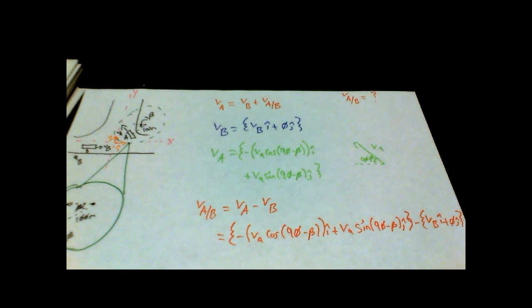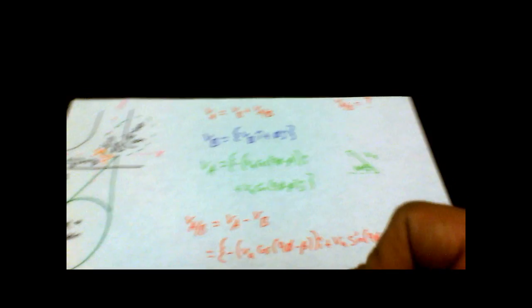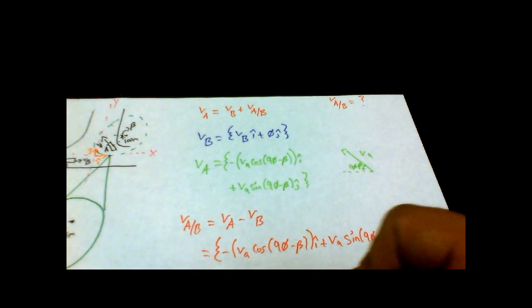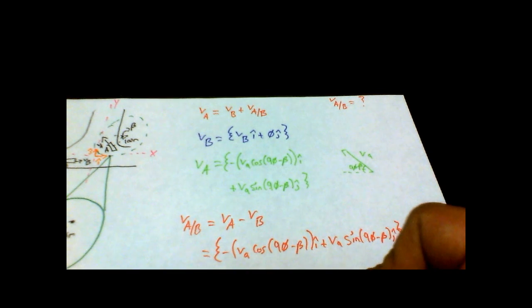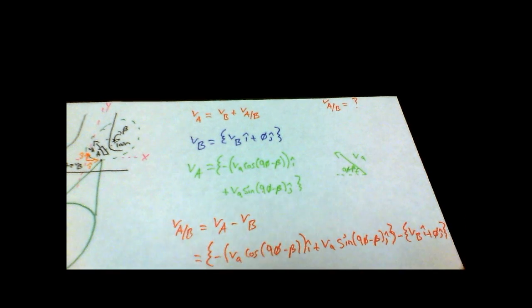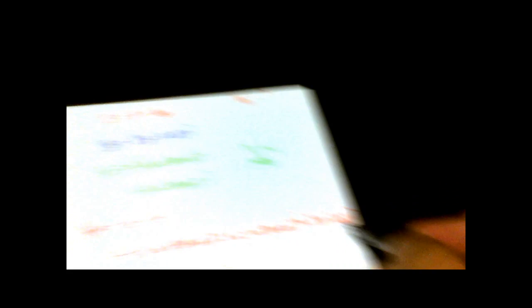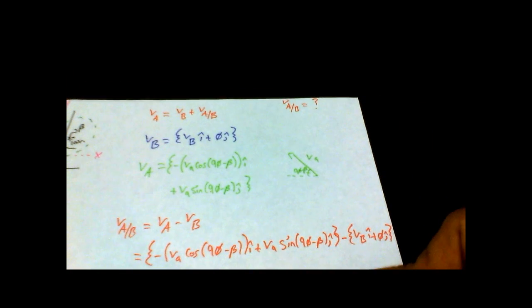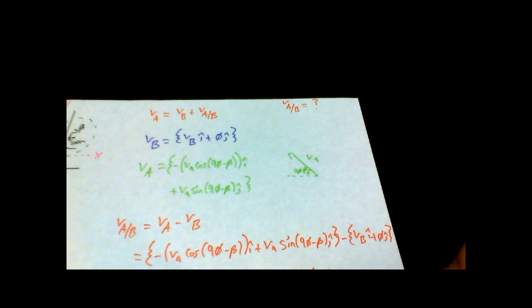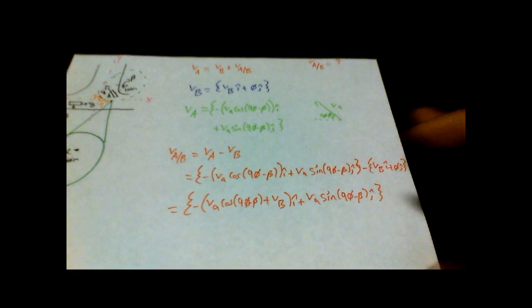This is going to equal, since you're subtracting V_B from this, I'm just going to factor out the negative. And we're going to get negative [V_A cos(90 minus beta) plus V_B] i plus, since the y-direction inverse is 0, we're going to get V_A sin(90 minus beta) in the j direction. There we go.